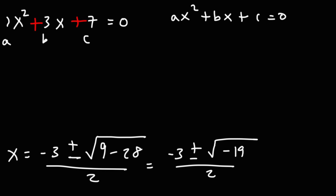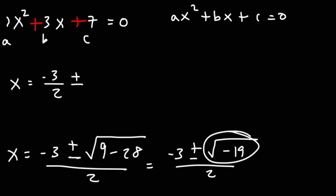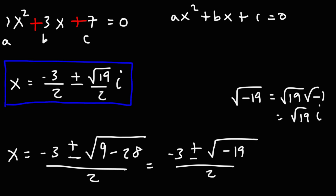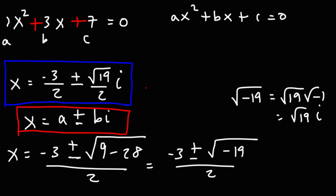At this point, we could break up the fraction into two smaller fractions. The first part is going to be negative 3 over 2, and then plus or minus — the second part will be the square root of negative 19 over 2. Now, the square root of negative 19 is the square root of 19 times the square root of negative 1, which is root 19 times i. So we can write that as plus or minus the square root of 19 over 2 times i. We can leave our answer in this format — notice that this is in a plus or minus bi format.